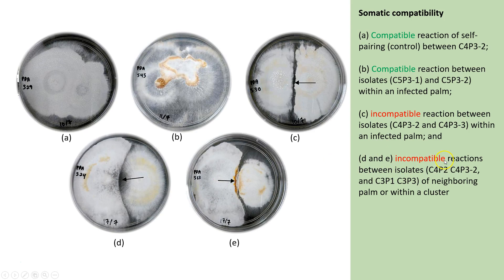Incompatible reactions were also observed between isolates from different palms and different clusters. These findings are supported by other researchers who further tested using AFLP (amplified fragment length polymorphism) analysis. This suggests that dispersal of basidiospores plays an important role in the epidemiology of the disease as basidiospores contribute to the build-up of inoculum. Hence, preventive measures to minimize basidiospore spread should be taken — such as removing inoculum sources in and around planting areas that develop into fruiting bodies, and removing existing fruiting bodies.